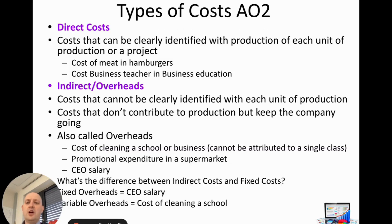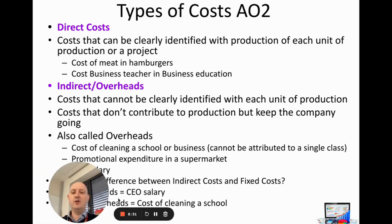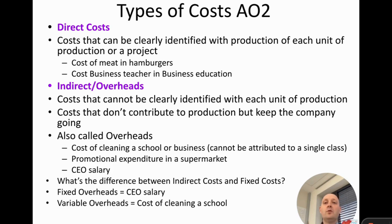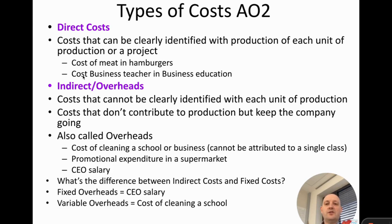Now we move on to the final type of costs: direct and indirect costs. These operate similarly to fixed and variable costs — they're another way to classify costs. Direct costs are costs that can be clearly identified with the production of each unit or a project. For example, the meat used in hamburgers is clearly linked to hamburger production, and a business teacher's salary is directly associated with delivering education.